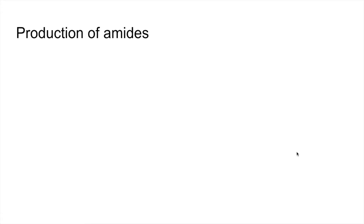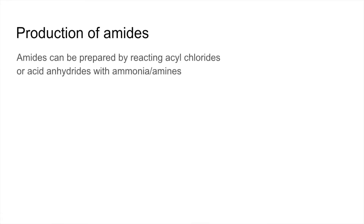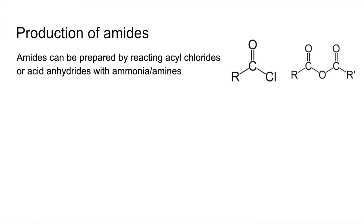Now we'll look at how to make amides. Remember: amides can be prepared by reacting acyl chlorides or acid anhydrides with ammonia or amines. Just a reminder of the structures of those two functional groups — acyl chlorides look like this, and acid anhydrides look like that. Often the R groups are the same, but they can be different.